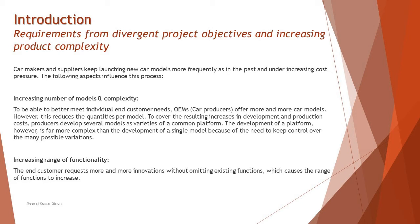For a particular model of a car you may have a number of variants because people might say they want or don't want certain features, so you cannot just create a static model with only one option. You customize based on the expectations of the customer, and that further increases the product complexity. That's where we try to understand how exactly these objectives differ and how to tackle them being an automobile engineer or tester. Car makers and suppliers keep launching new car models more frequently than in the past, and this is done under increasing cost pressure.